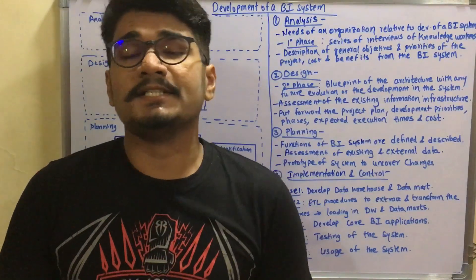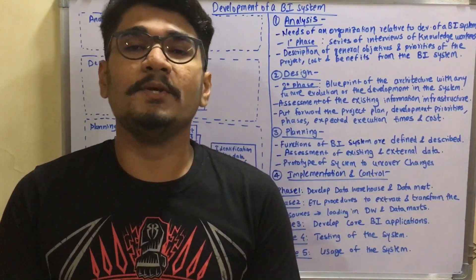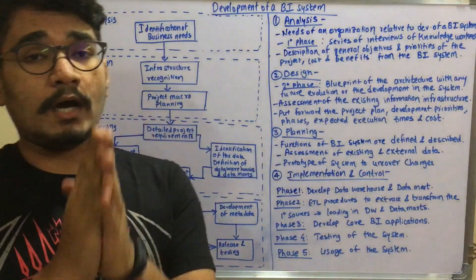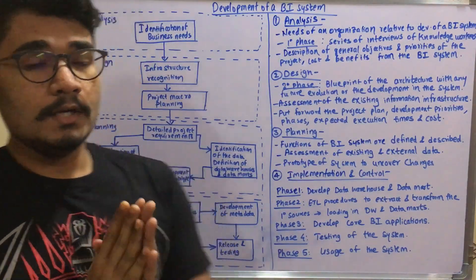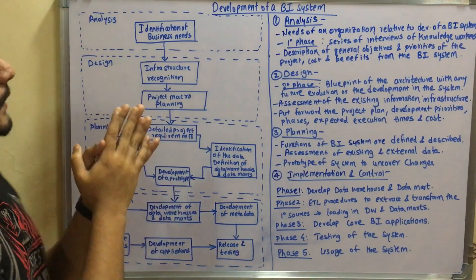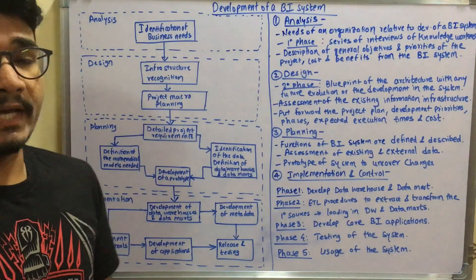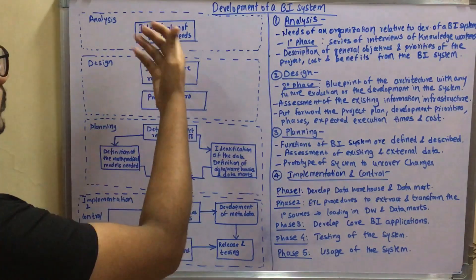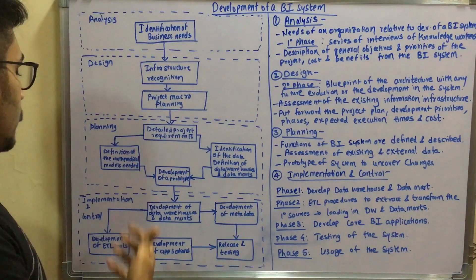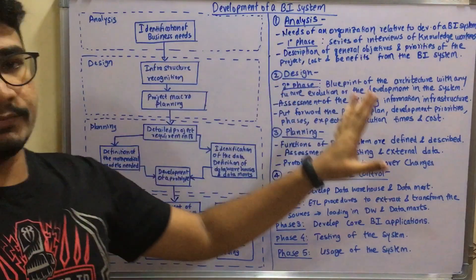Welcome to another video on data mining. Today we'll be seeing the various phases of how you can develop a BI system. There are four different phases or parts: first you have the analysis, then you have the design, planning, implementation, and control. We have the diagram as well as the theory to cover.